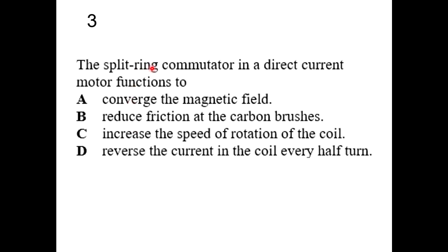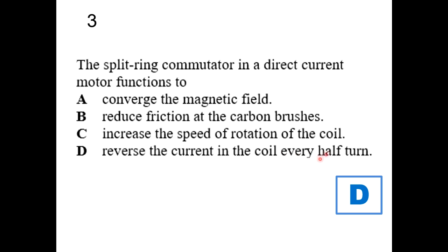Question 3: the split ring (commutator) in a direct current motor functions to reverse the current in the coil every half turn, so that the coil can rotate in the same direction. If the coil initially rotates anti-clockwise, it will always continue rotating anti-clockwise due to the commutator's action.